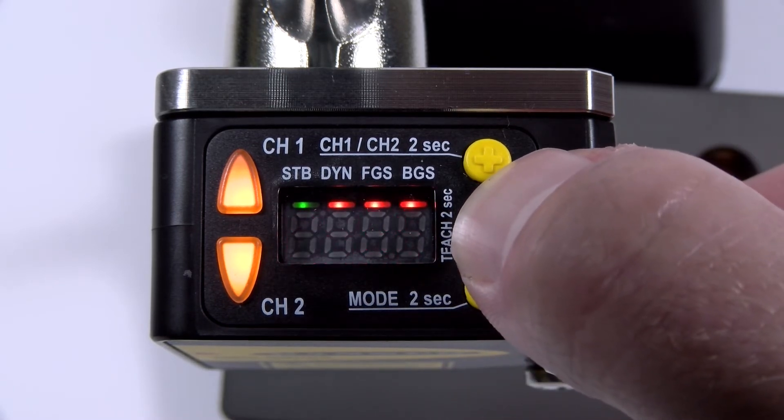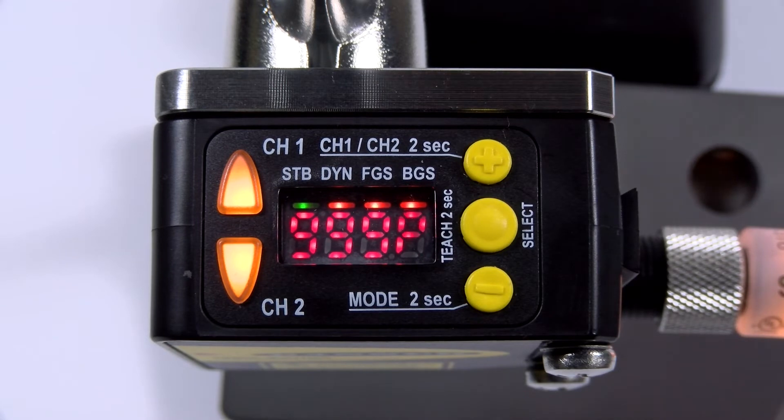Next, hold the middle button for more than two seconds to confirm the selection. You will see 999p on the screen. This means that the sensor still needs to be taught.